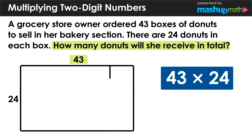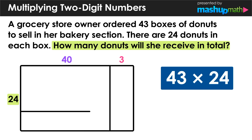Starting with 43, we can represent this in easier terms and think of 43 as the sum of 40 and 3 — these numbers are much easier to work with. We can do the same with 24 by thinking of it as the sum of 20 and 4. Again, these numbers are much easier to work with.